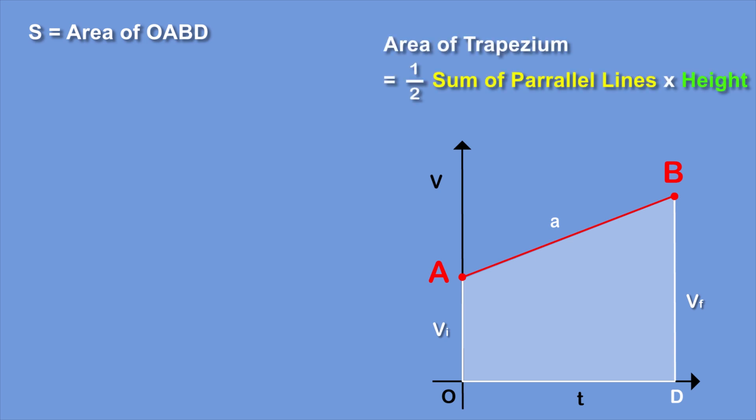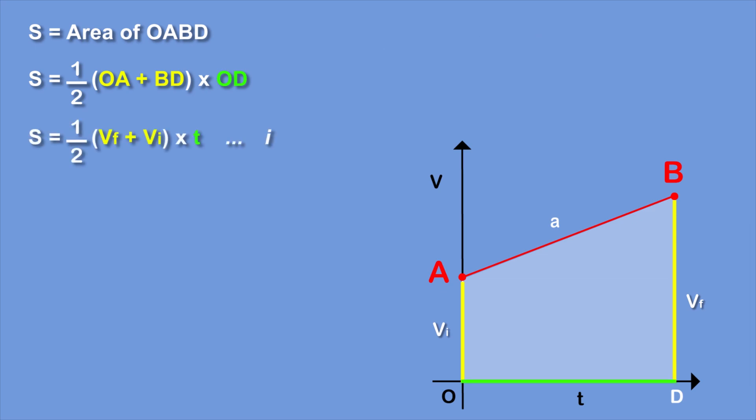Area of a trapezium is equal to half of sum of parallel lines into height. So the equation would be s equals half OA plus BD into OD. In the graph BD is vf, OA is vi and OD is t. So we will get s equals half vf plus vi into t.